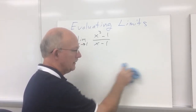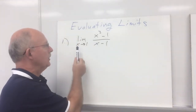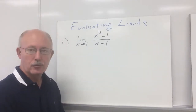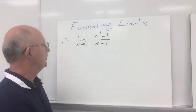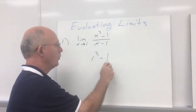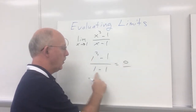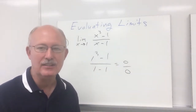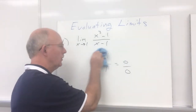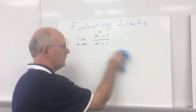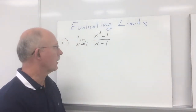Because the hole can be removed, and to remove it you have to factor it. Let's take a look at example number one. First, try direct substitution. Substituting one in for x gives you one cubed minus one over one minus one. One cubed minus one gives you zero, and one minus one gives you zero. So that indicates that this particular problem has a hole.